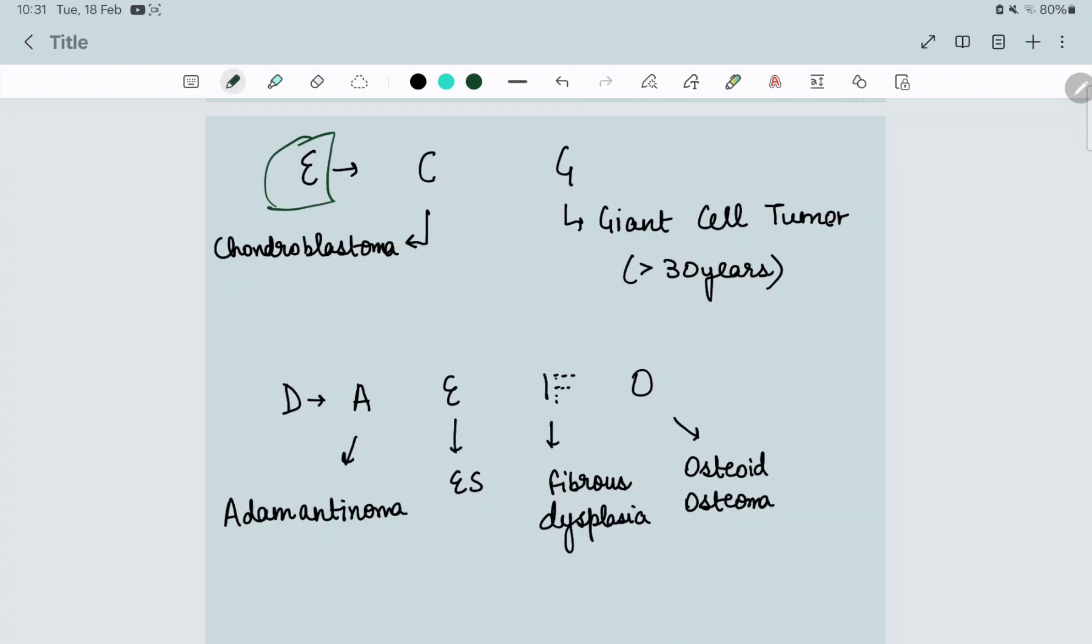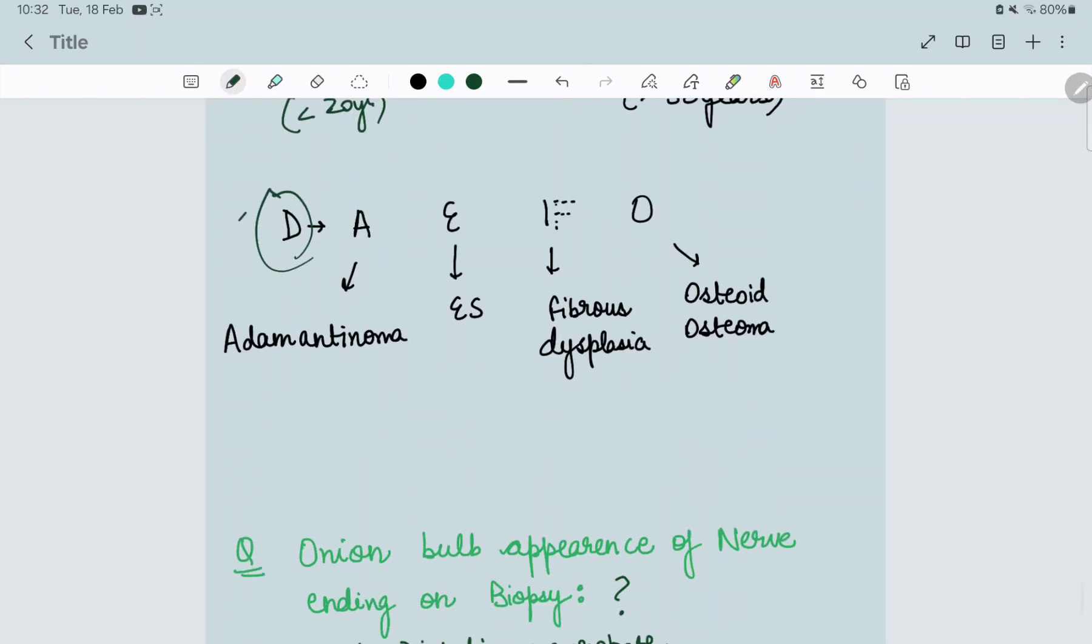From ECG, C is chondroblastoma and G is giant cell tumor. Giant cell occurs after 20-30 years of age, after skeletal maturity. Chondroblastoma is less than 20-30 years of age. From diaphysis, I used to learn the mnemonic AEIOU - the vowels. From I, I converted into F.